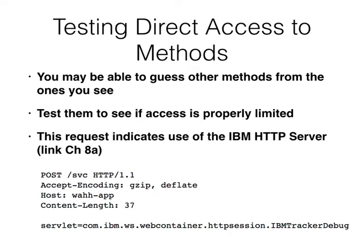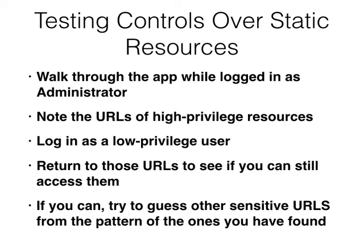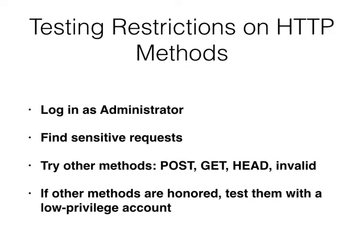Then there's direct access to methods. You can try to guess other functions that might be available to call — you might see a pattern, or recognize something like an IBM Tracker debug string. If you Google that, it tells you it's using IBM HTTP Server, which implies a whole bunch of other methods are available, so you can try them all and see if any of them forgot to apply access controls. Walk through the app logged in as administrator, note the URLs of high-privilege pages, then log out and try them as a low-privilege user to see if you can get there. Also try other verbs — POST, GET, HEAD, PUT, and invalid requests — to find unusual verbs that bypass restrictions.